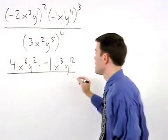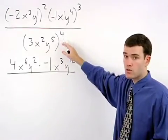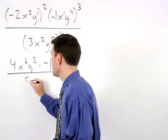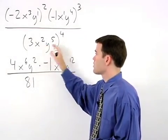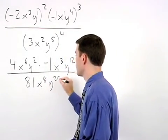In our denominator, we take our coefficient of 3 to the fourth power, which is 3 times 3 times 3 times 3, or 81, and multiply each of the exponents by 4 to get x to the eighth y to the twentieth.